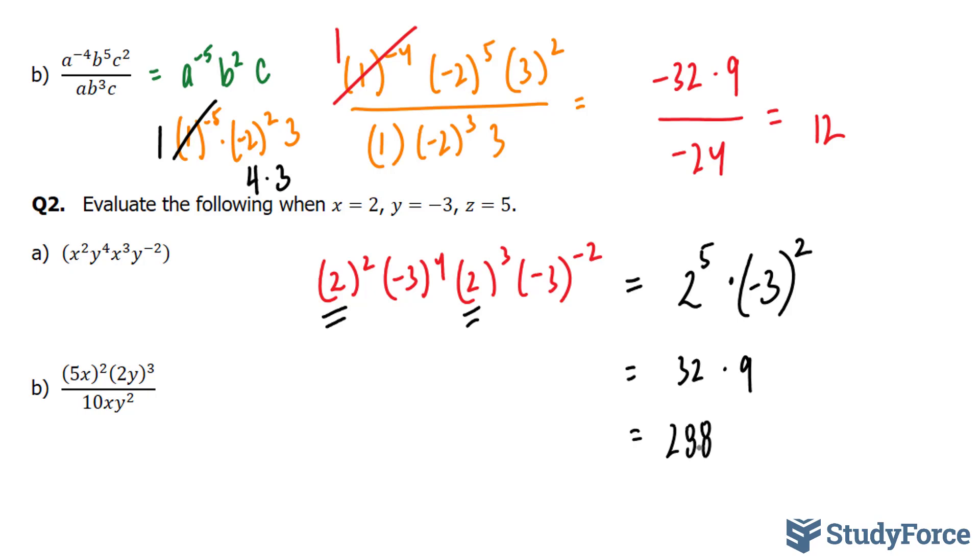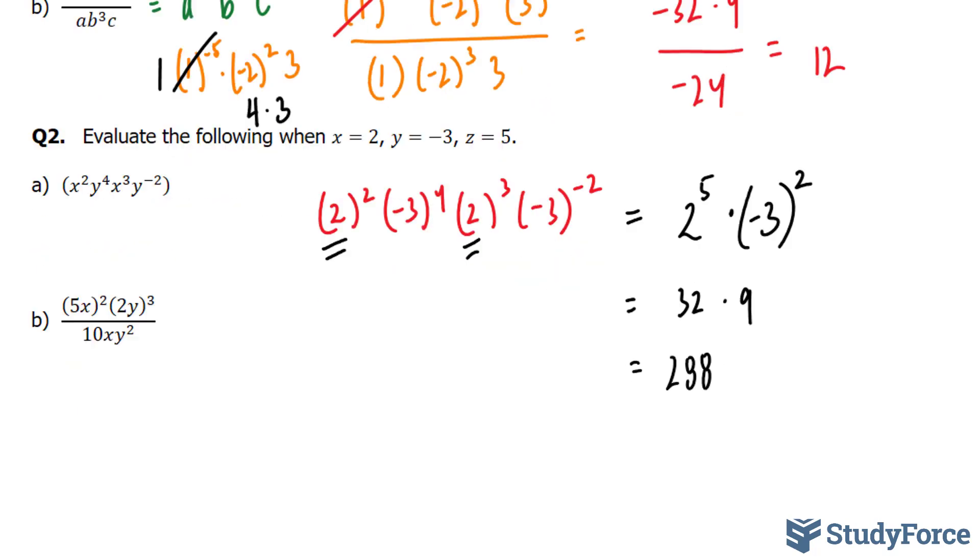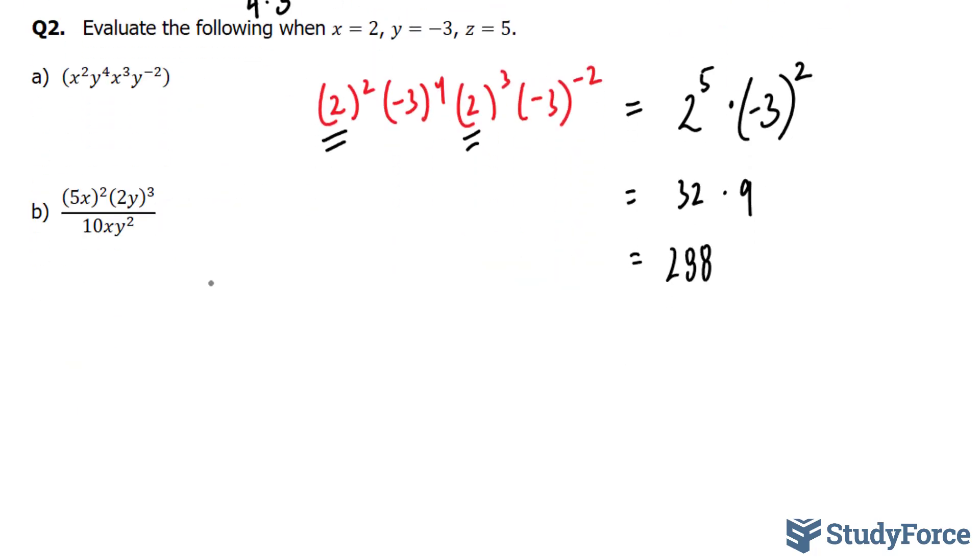Just to keep in mind that the laws of exponents could have been applied at this level as well. Finally, our last question in this tutorial. We have 5 times 2 to the power of 2, 2 times negative 3 to the power of 3. And at the bottom, 10 times 2 times negative 3 to the power of 2.